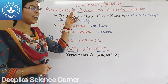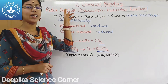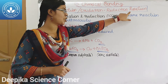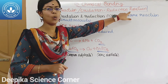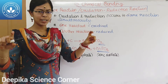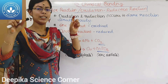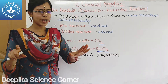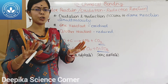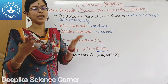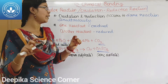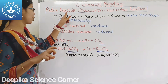Next: redox reaction. The redox reaction is an oxidation-reduction reaction. When oxidation and reduction reactions occur simultaneously in one chemical reaction, we call it a redox reaction.